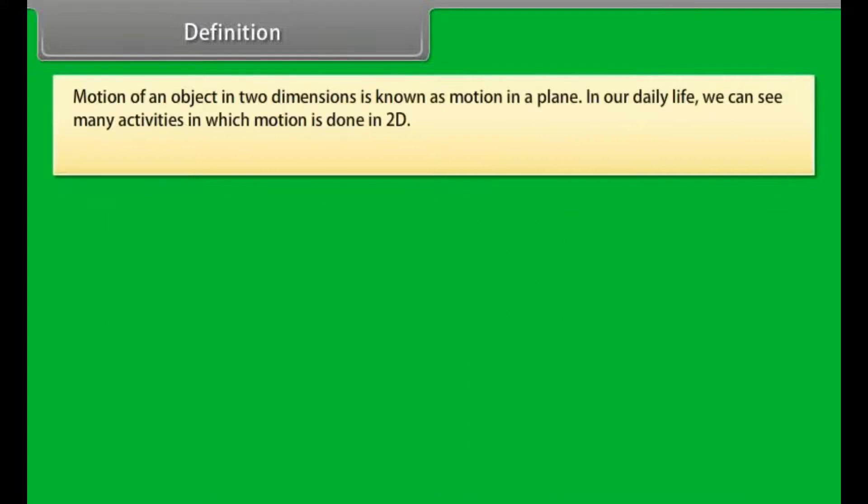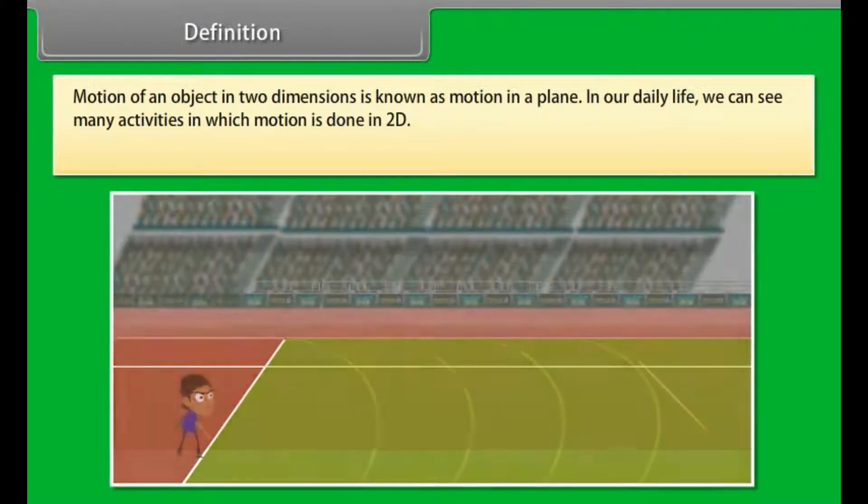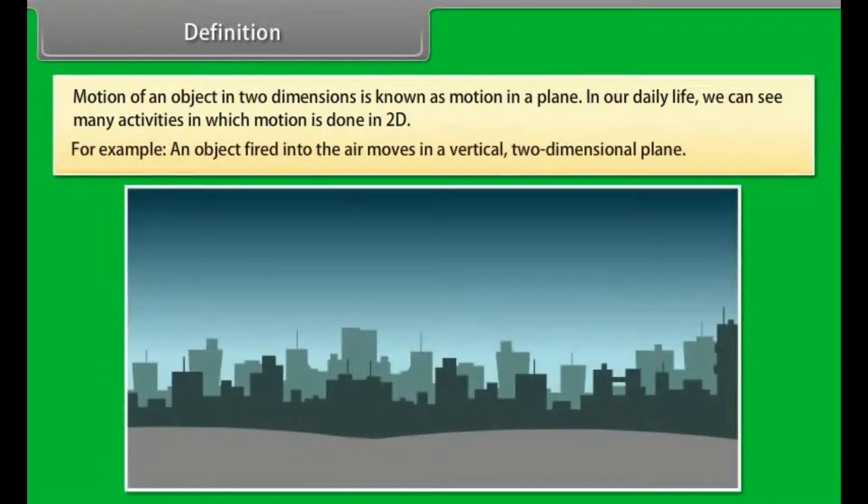Definition. Motion of an object in two dimensions is known as motion in a plane. In our daily life, we can see many activities in which motion is done in two dimensions. For example, an object fired into the air moves in a vertical two-dimensional plane.